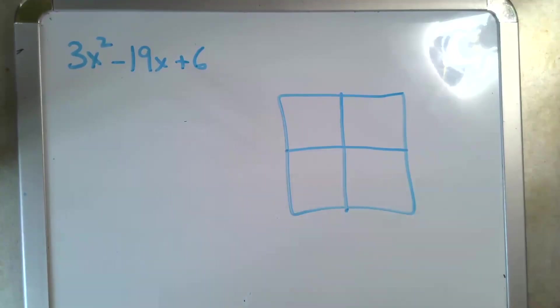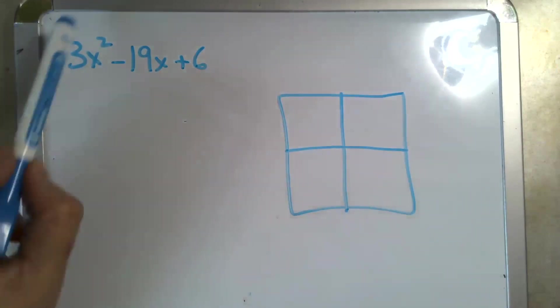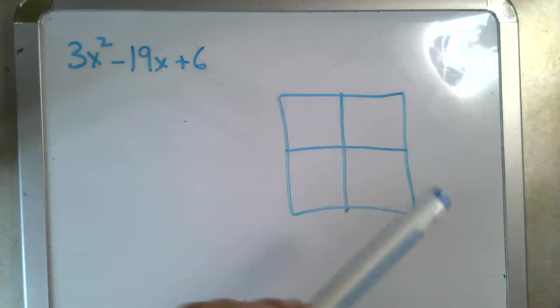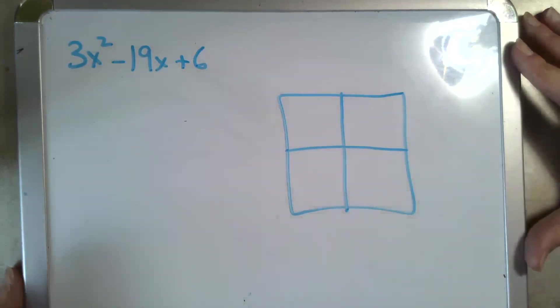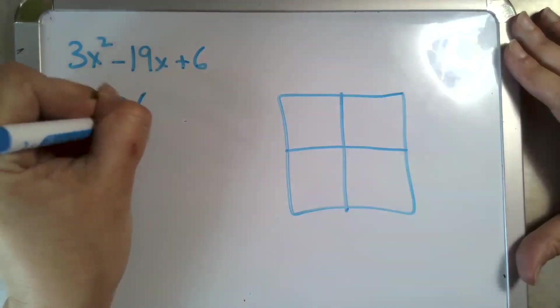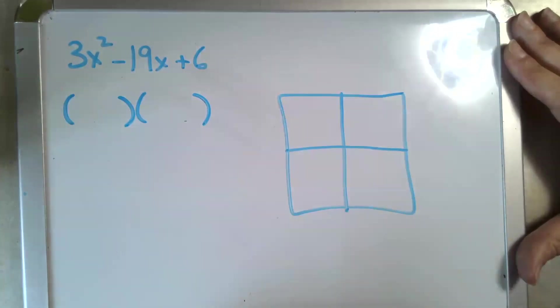Here we have the quadratic 3x² - 19x + 6. As you can see, the coefficient of x² is more than one, which is one of the best uses of this box. The box gives you a visual version of FOIL. We're looking to fill in the two binomials that this quadratic factors into.